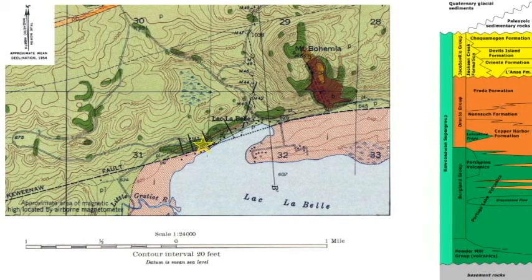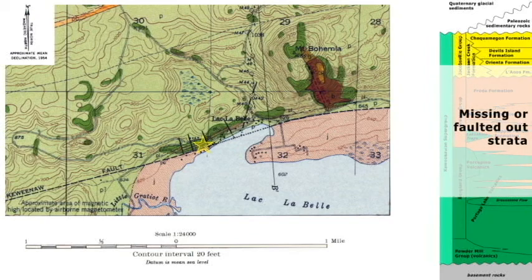Using my revised stratigraphic column of the Mid-Continental Rift rocks in the Upper Peninsula and neighboring Wisconsin, this stratigraphic column on the right is going to show you, in a little better way, what's missing. The white parts are missing or faulted-out strata. We don't really know exactly what is missing — we know some is faulted out. The units could entirely be there, just deeply buried under the Jacobsville. No one's drilled that deep, so we're just going by what we know from the surface deposits.